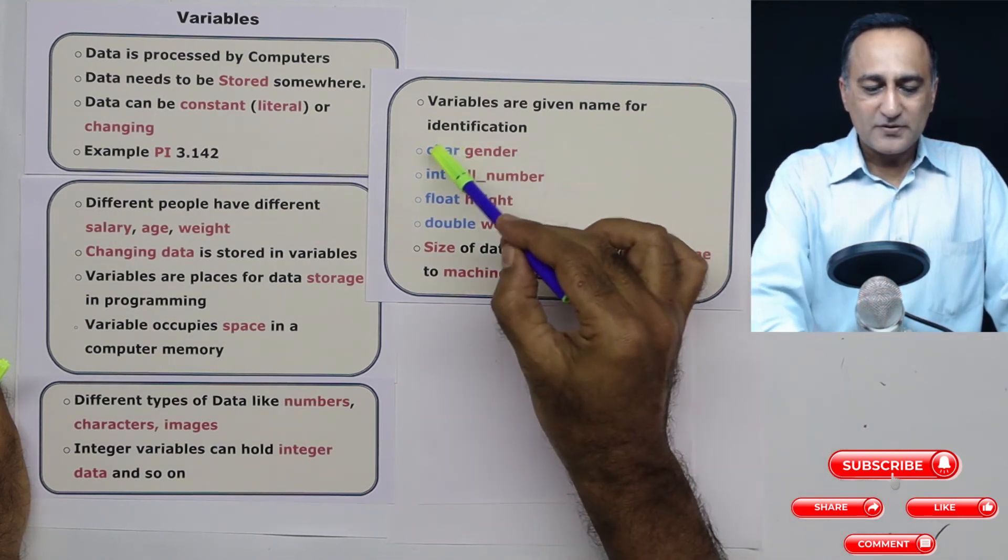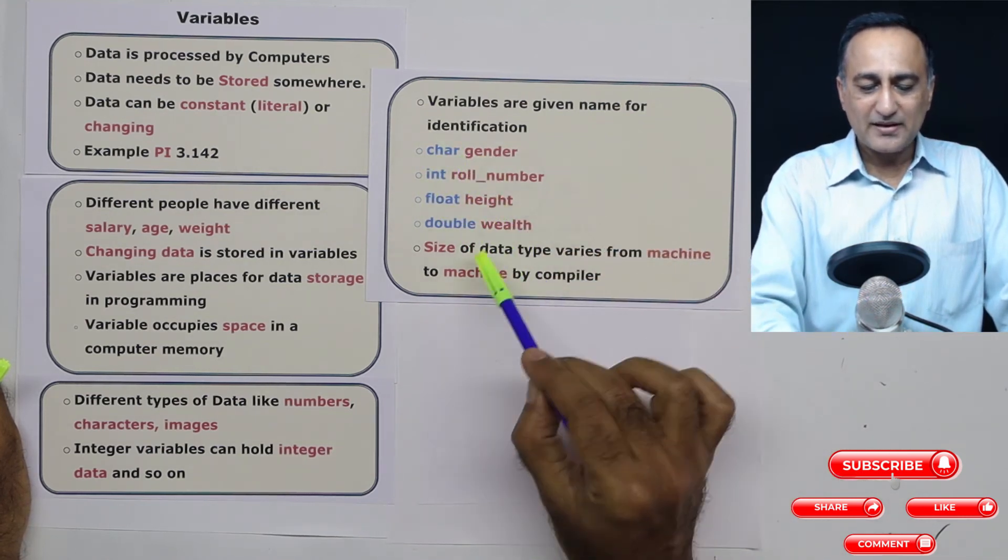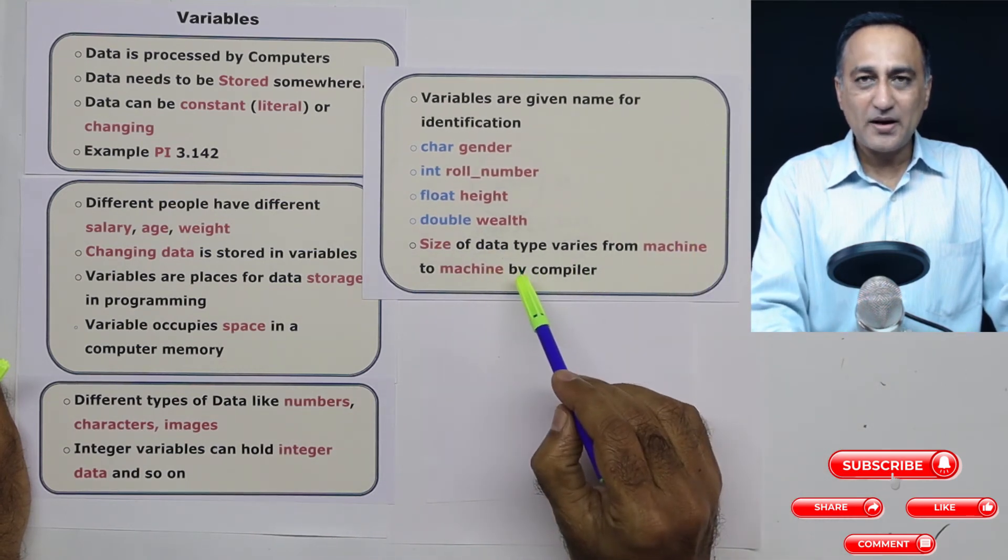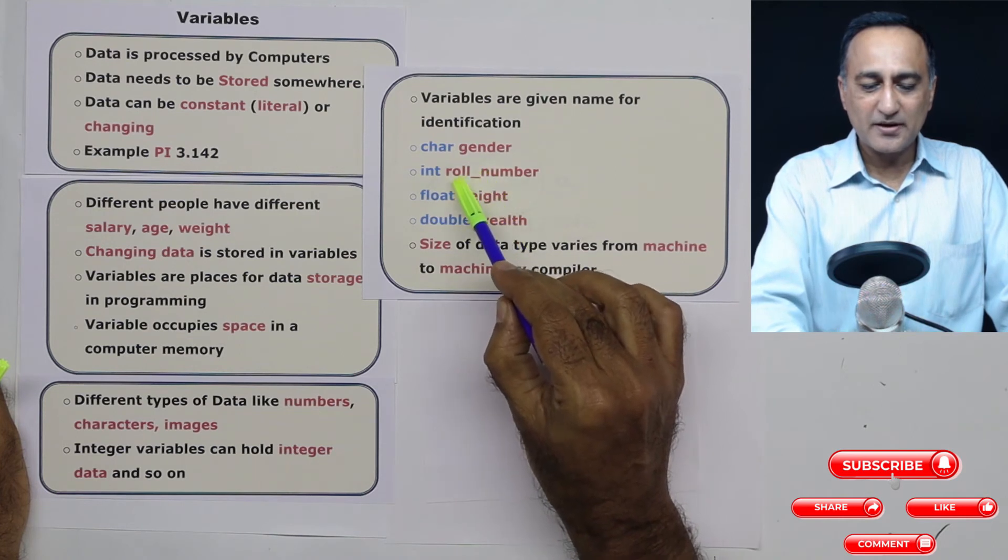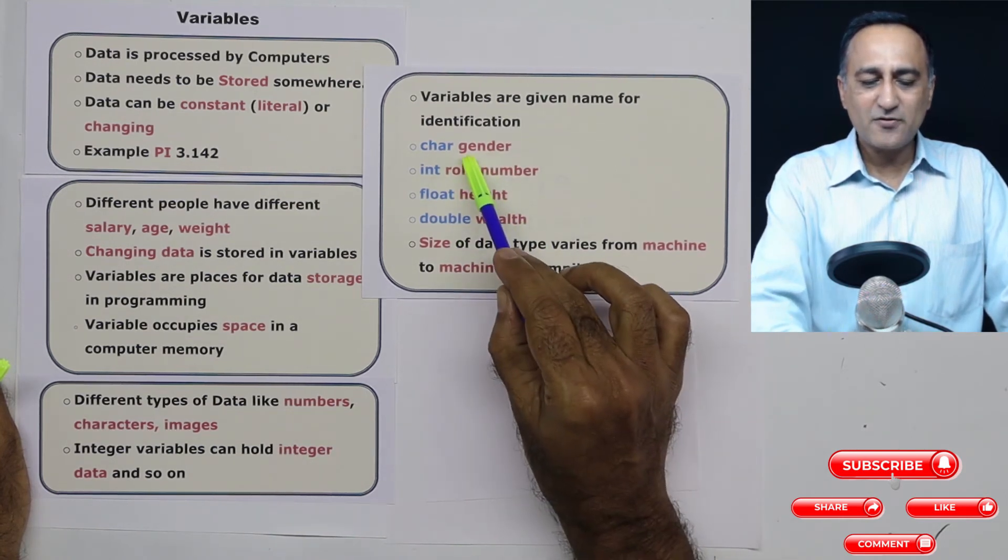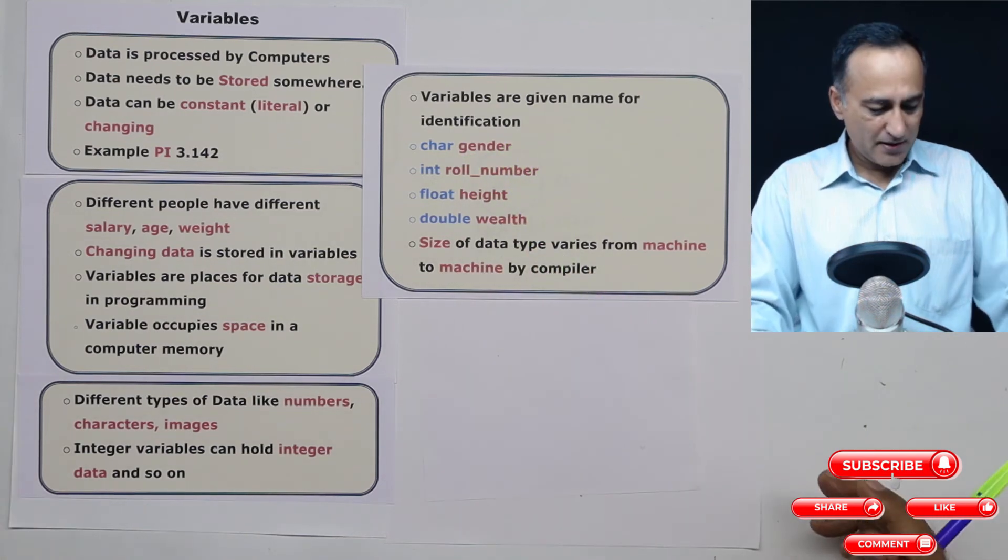Now for all of this, with the exception of character, the size of data simply varies or depends upon hardware to hardware. And the size of these particular data types from int to double is determined by the machine. The size of char is always going to be one byte.